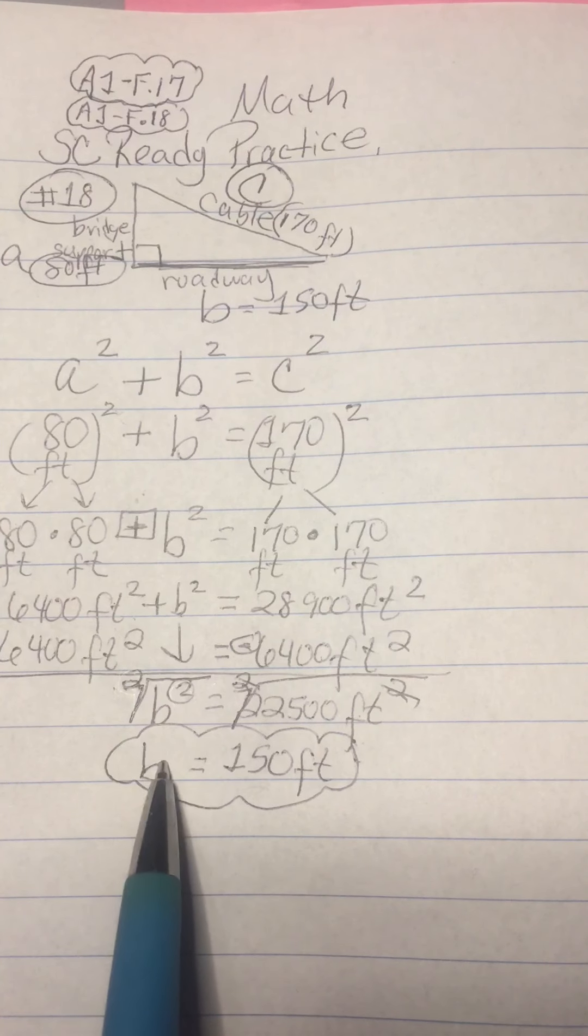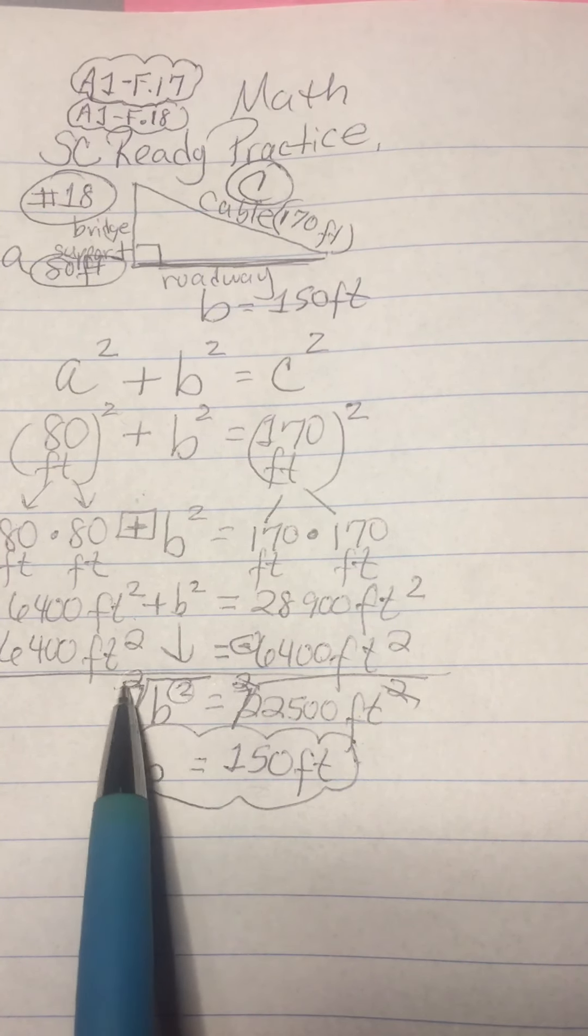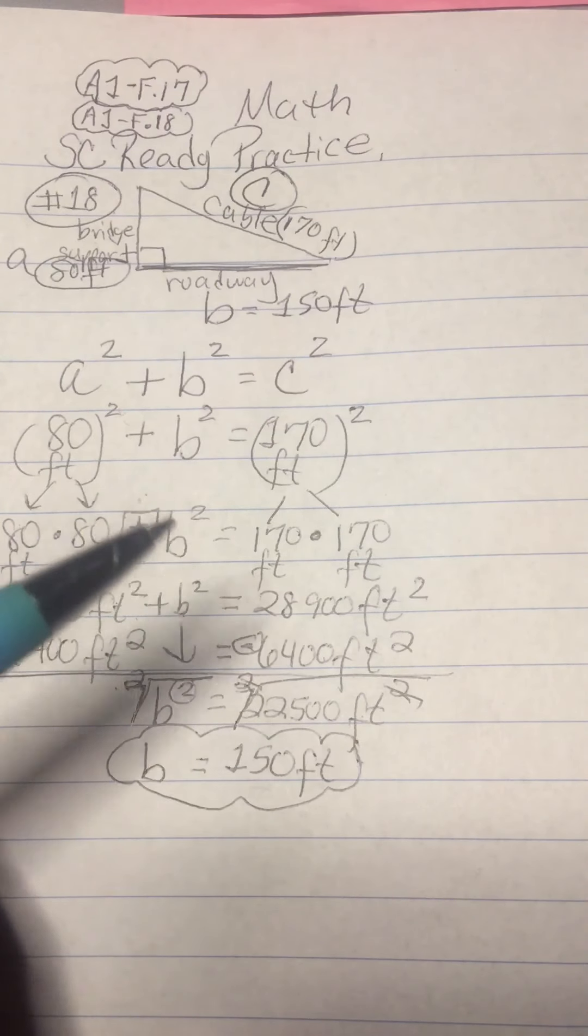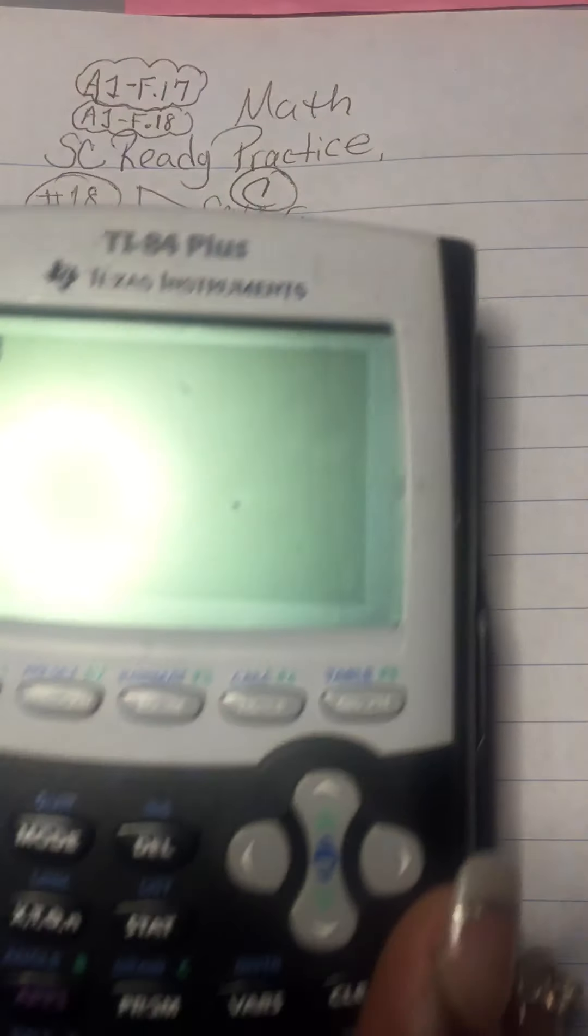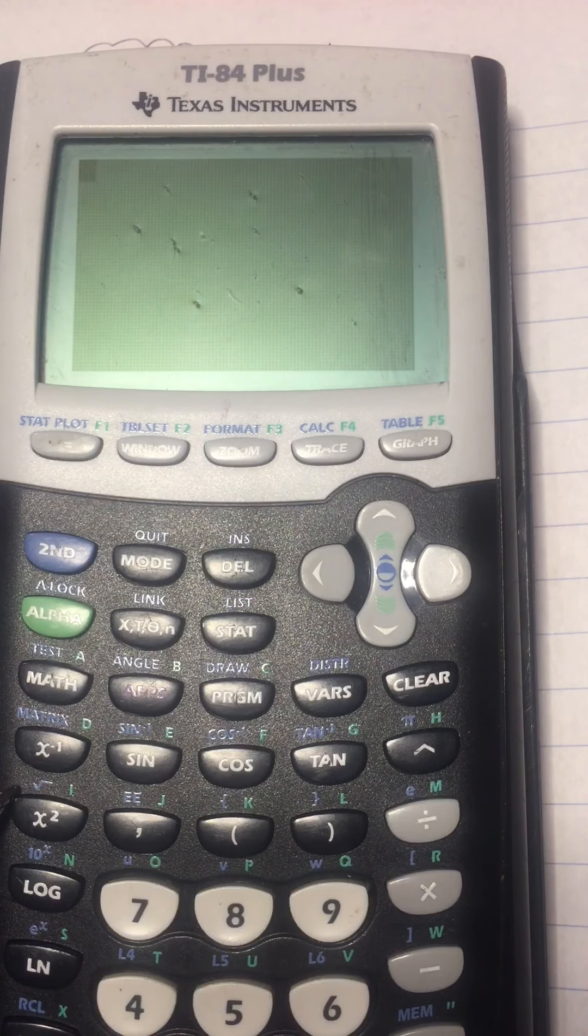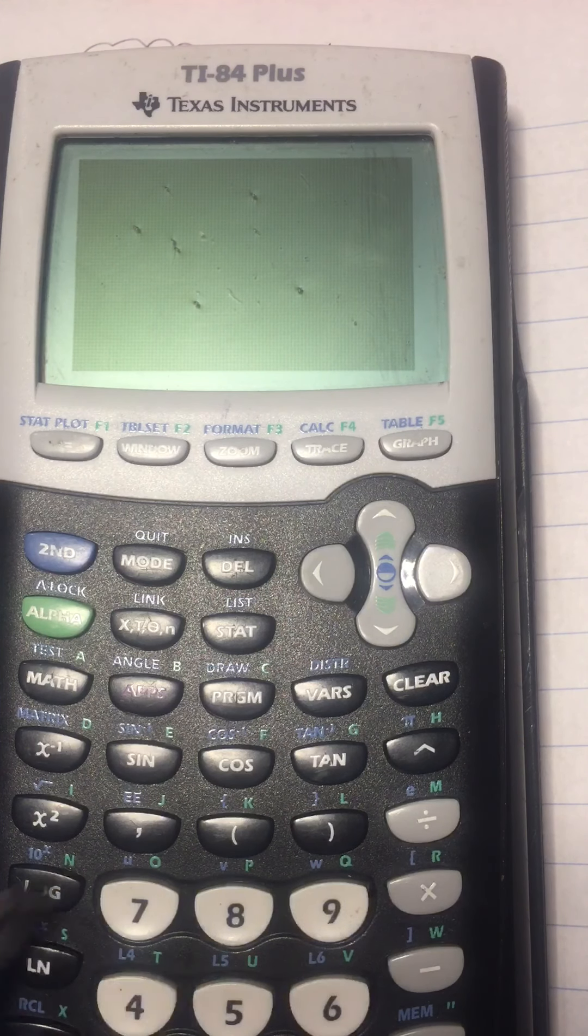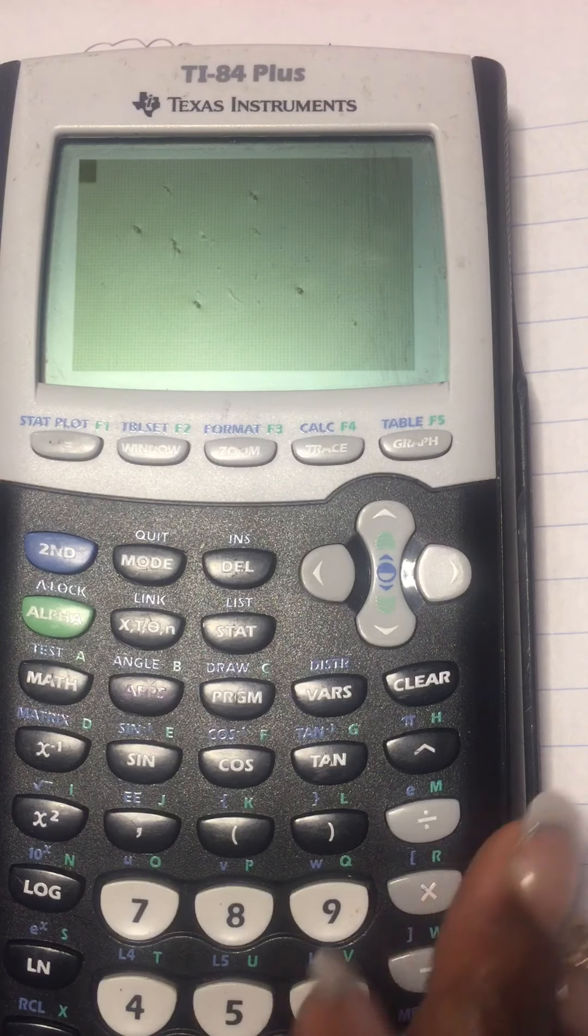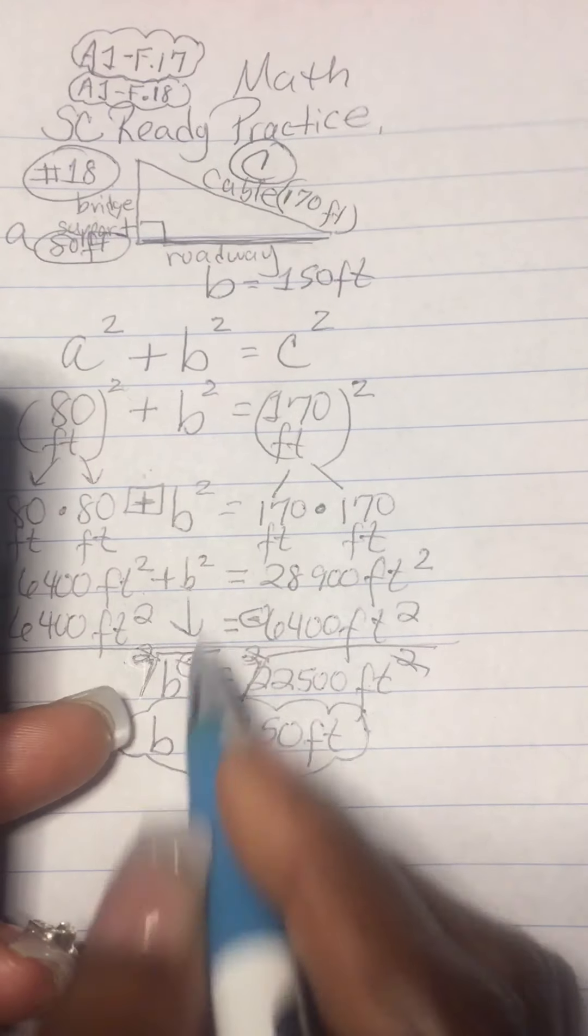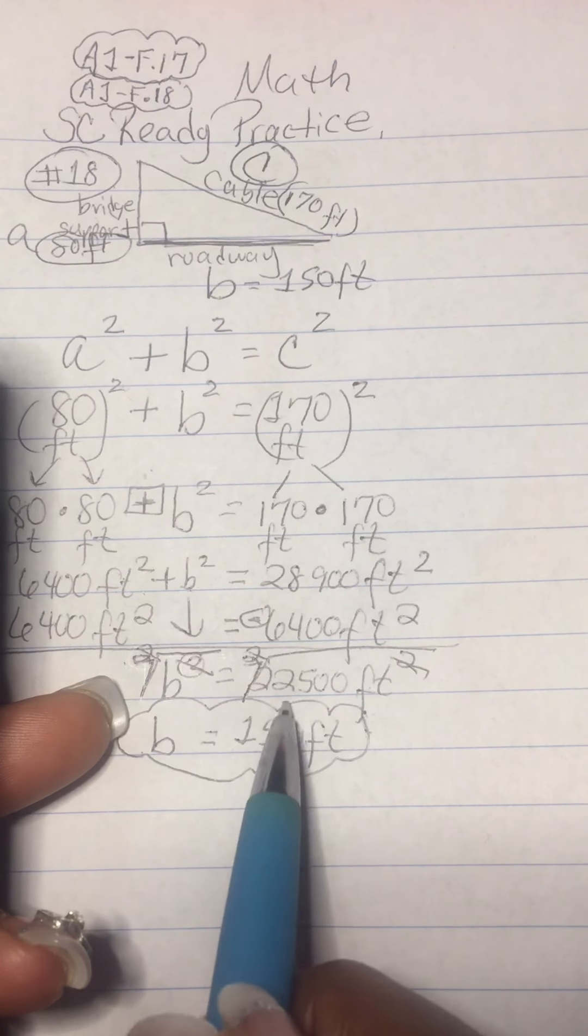So I'm going to do the opposite so I can get B by itself. I don't want B squared, I just want B, so I've got to get rid of the squared by doing the square root of both sides. So 2 divided by 2 is 1, which leaves us with B. The square root of 22,500.